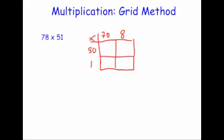And then we're just going to multiply. So we're going to do 50 times 70. Well, 5 times 7 is equal to 35, and add on the two zeros. 5 times 8 is 40, and then add on the 0, 400. 7 times 1 is 7, add on the 0, 70. And 1 times 8 is equal to 8.